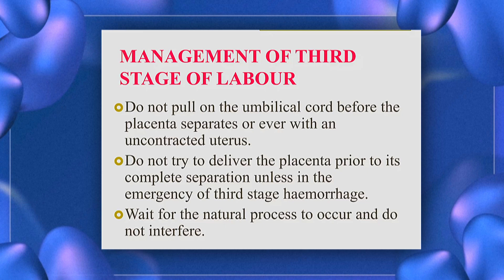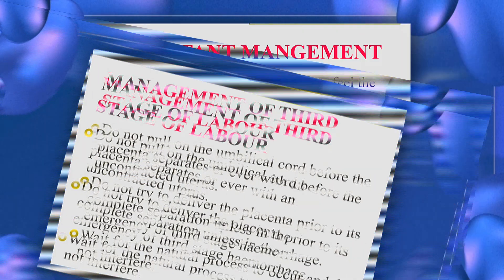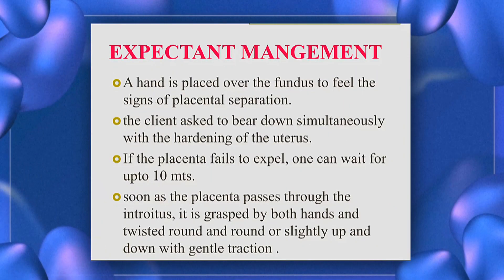Wait for the natural process to occur and do not interfere. Expectant management includes placing a hand over the fundus to feel the signs of placental separation. The client should bear down simultaneously with the hardening of the uterus. If the placenta fails to expel, one can wait up to 10 minutes. As soon as the placenta passes through the introitus, it is grasped with both hands and twisted round and round or slightly up and down with gentle traction.